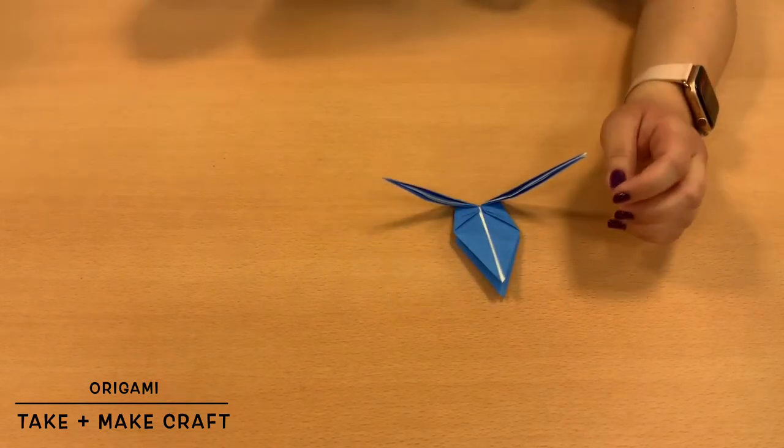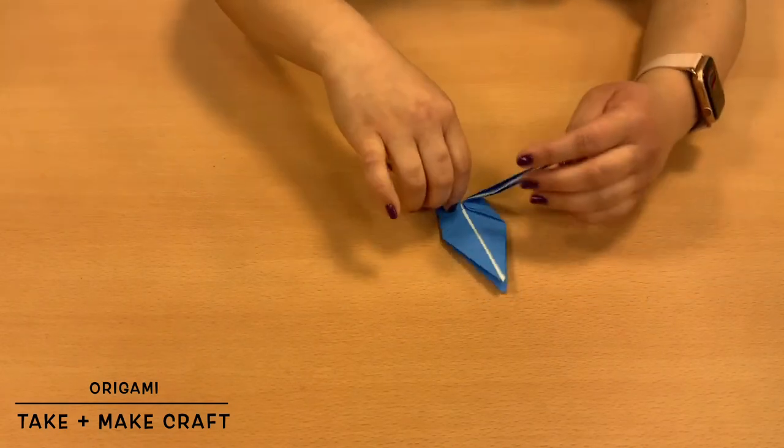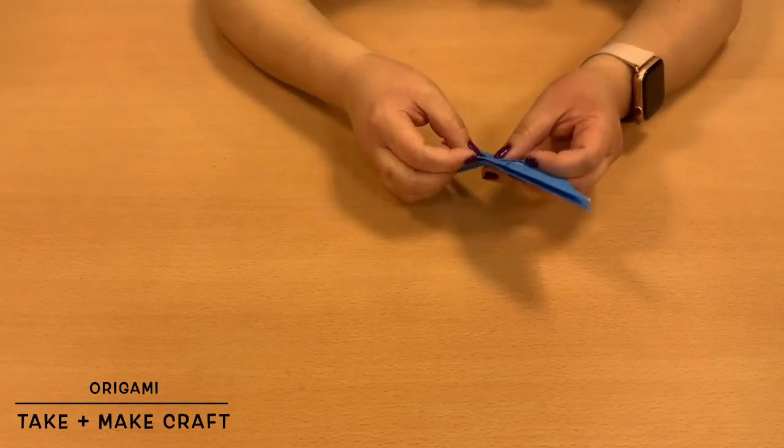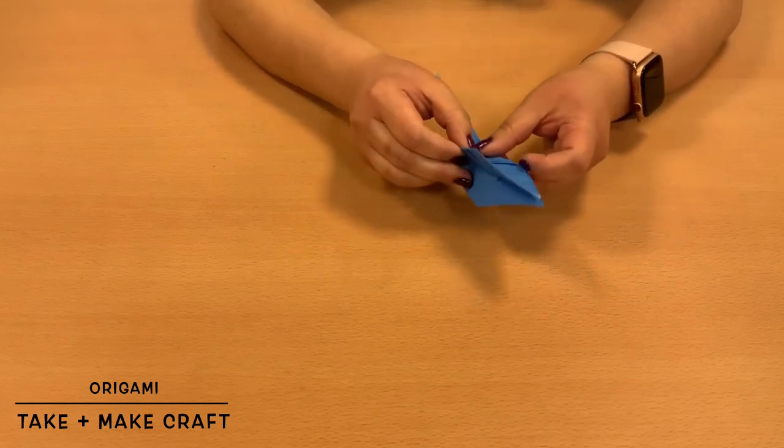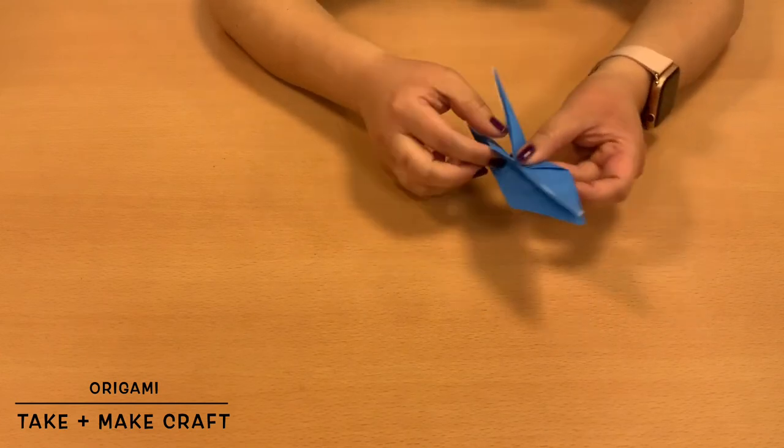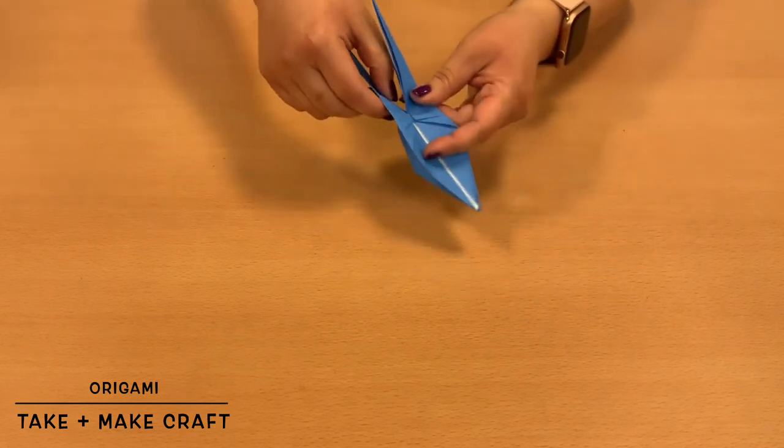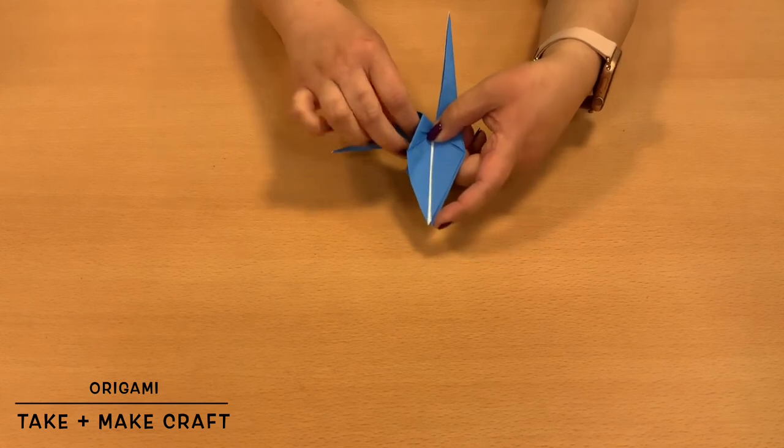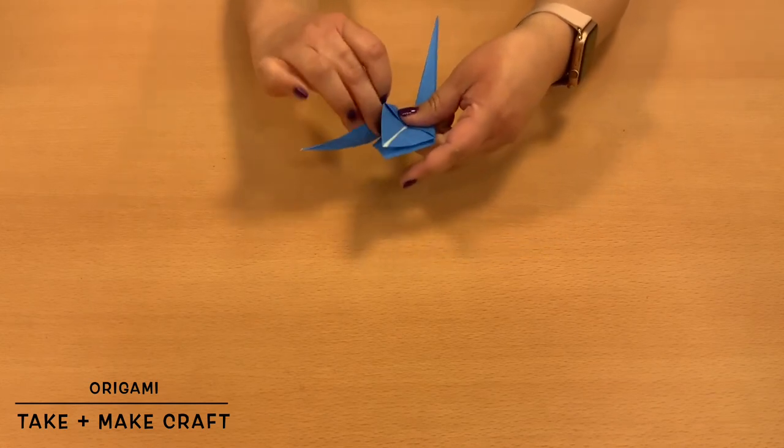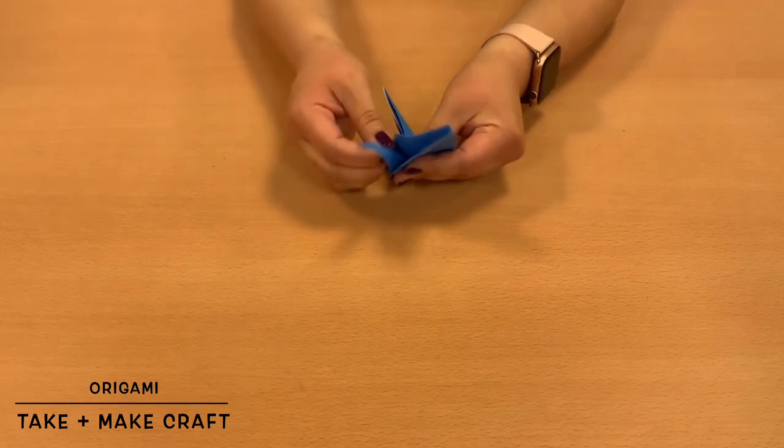Then, this might be a little tricky as well, but you'll go ahead and unfold it. And then, you're going to open up this crease here, and you're going to push on this side upwards. And they call this an inverse, a reverse fold.